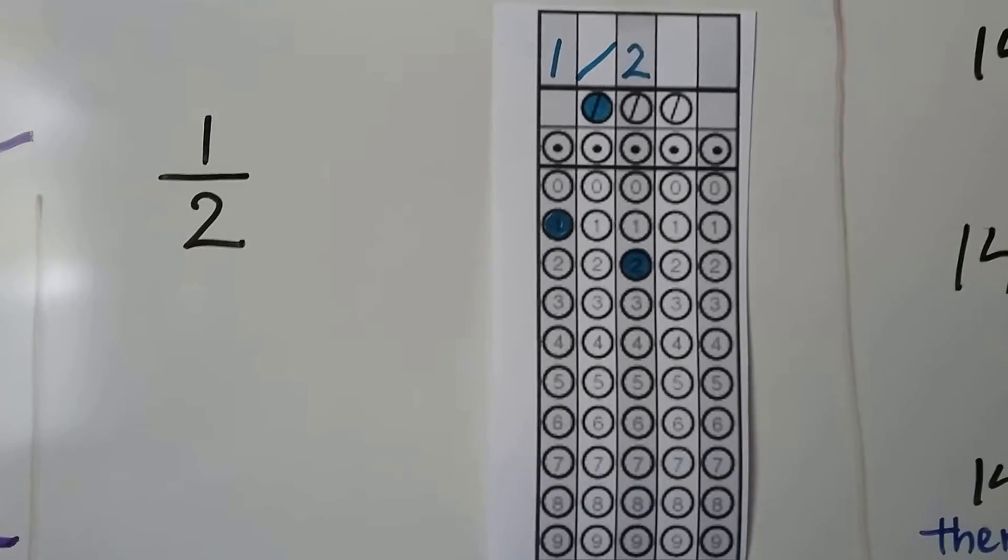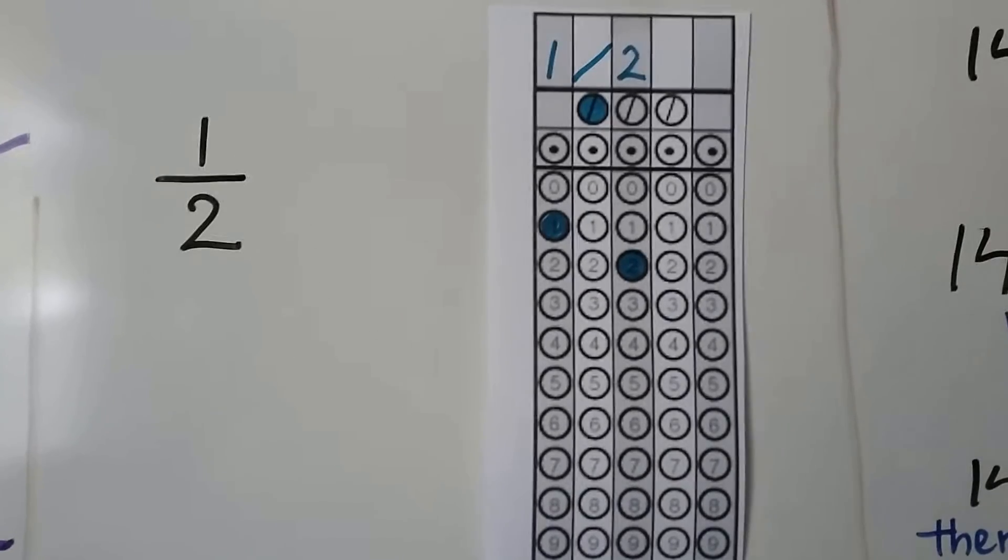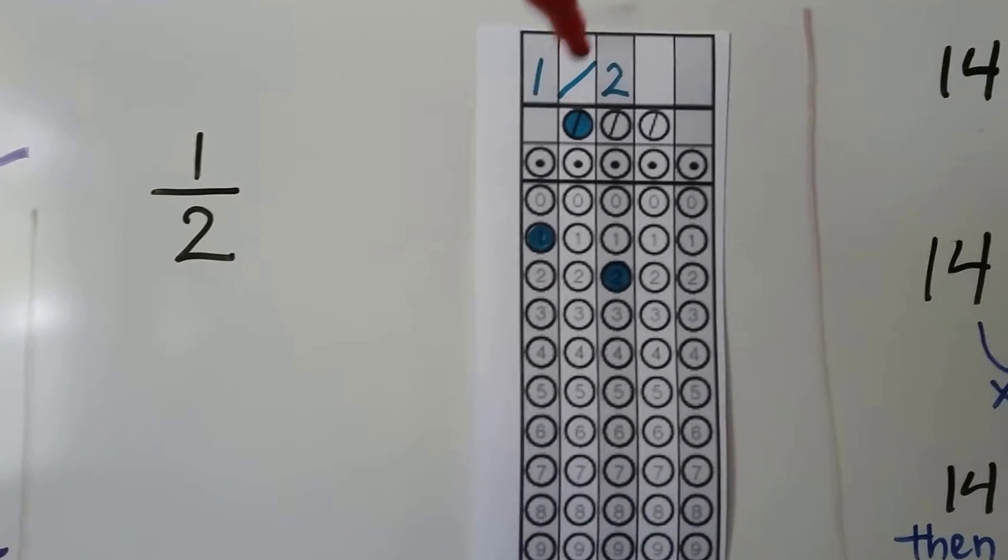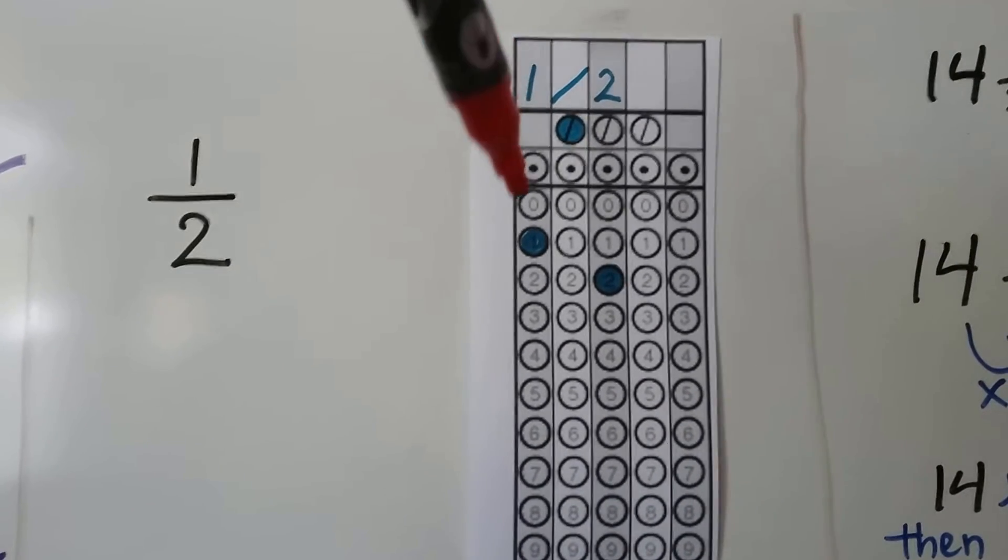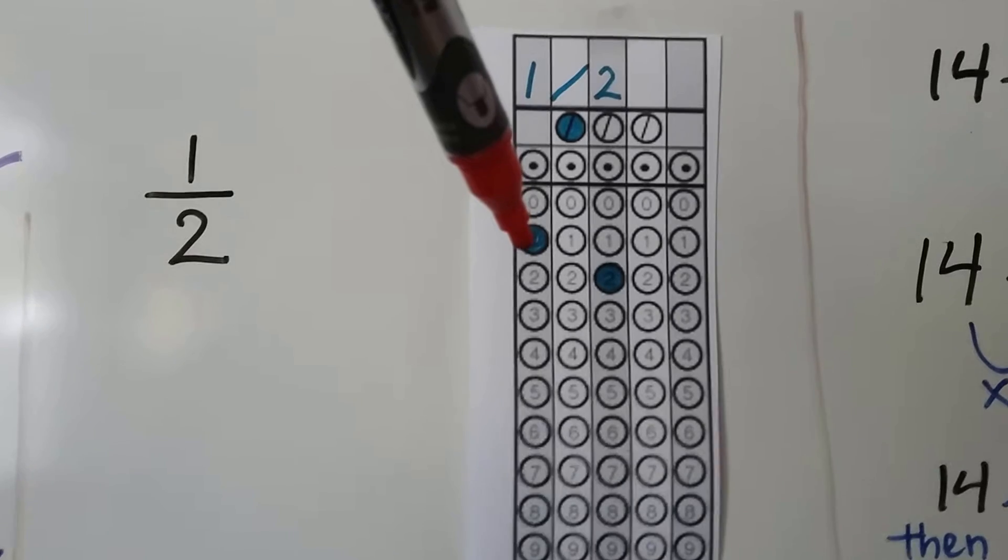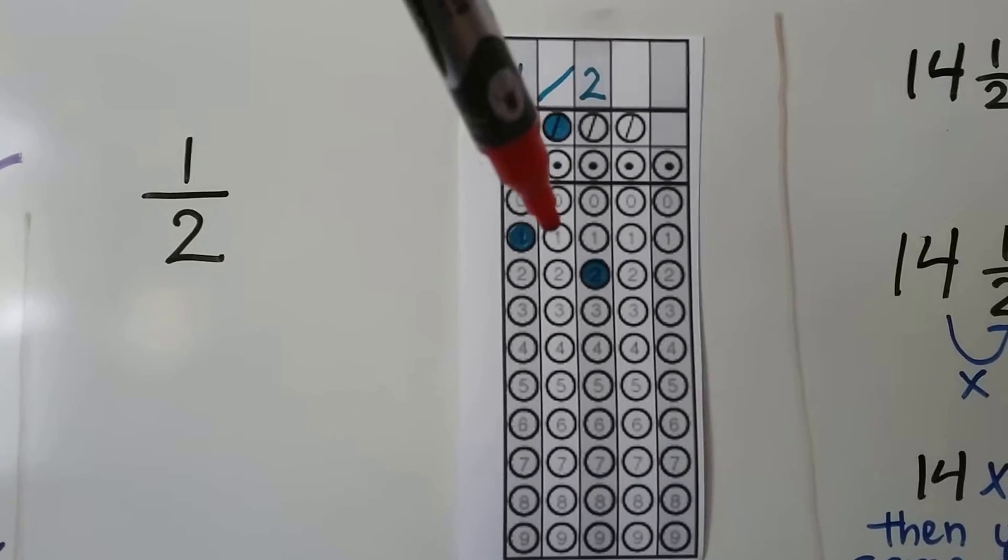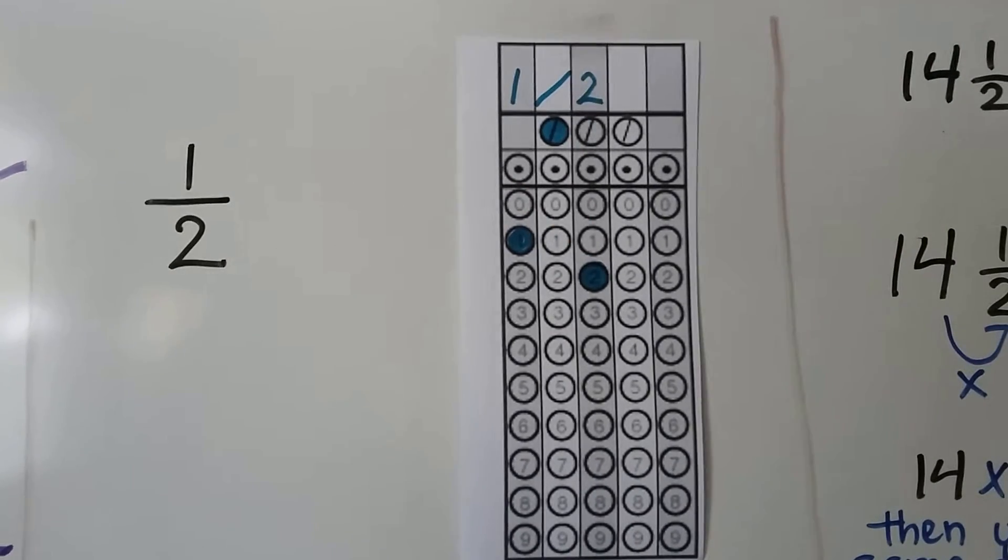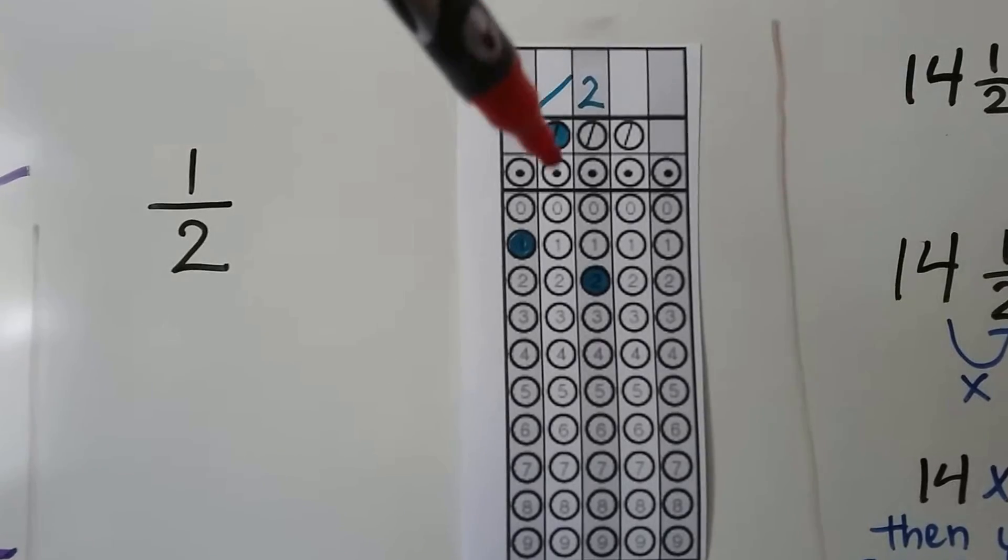So take a look at this one. The answer is half. And we have a one and then a slash and then a two. So we filled in the one circle, then the slash circle for this column, and then the two for this column. The slash gets its own column.